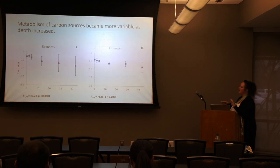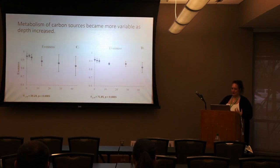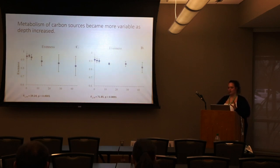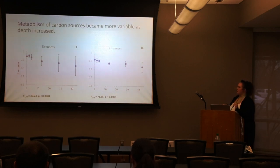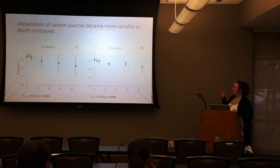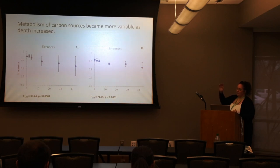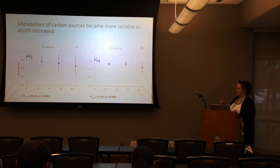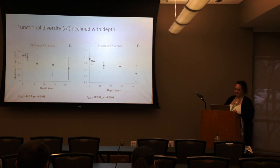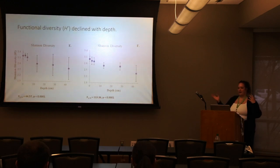When looking at evenness — high evenness means low variability in metabolism, so the community is metabolizing all 31 carbon sources about the same amount — we saw a similar trend to richness: at the soil surface we see more even utilization and less variation in metabolism, and that declines as we move deeper through the soil profile.